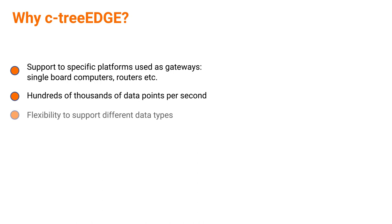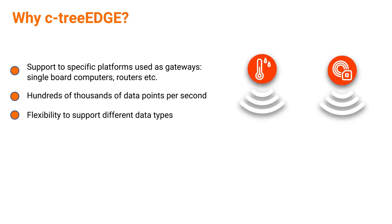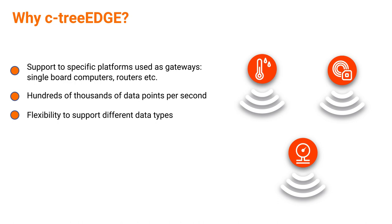Then there are data types — many different types of sensors, temperature, geo-positioning, and more. Whatever database you select for edge computing, it better handle different data types in a fast, easy way so you don't have to build complex structures to persist your data. Usually the data from sensors is simple but comes in different types and has to be flexible. That's critical and we handle that.